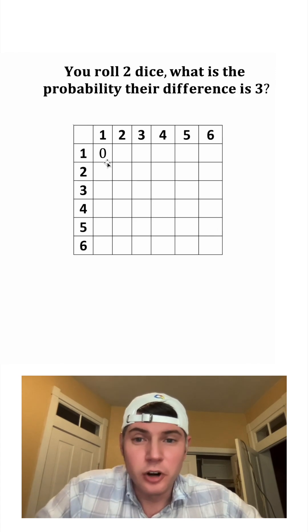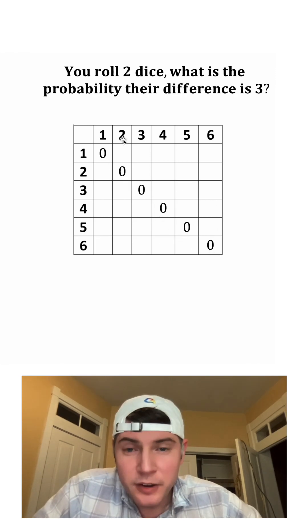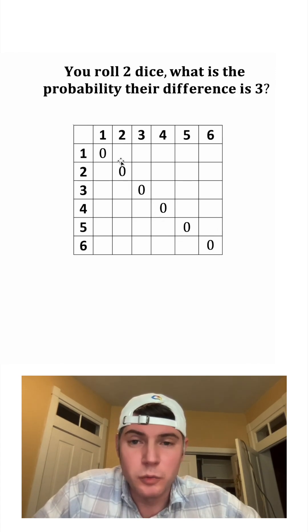And that's true for all of them along this diagonal. If we have something like this where one is a two and one is a one, their difference will be one. The same thing here, a two and a one will give us a difference of one.